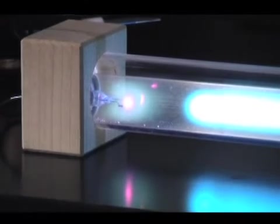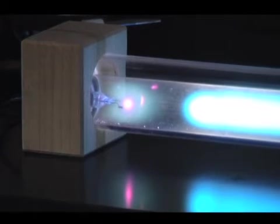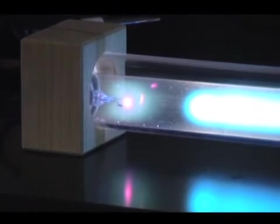After they collide, they slow down and have to pick up speed again to re-ionize the gas. When they do re-ionize the gas, they create the positive column, or the bigger plasma that you see in the rest of the tube.